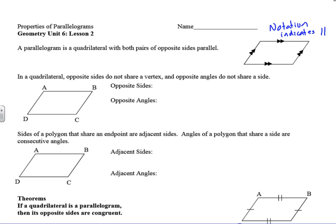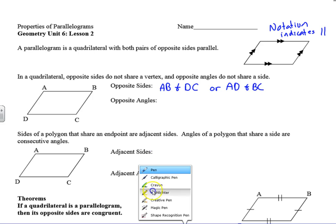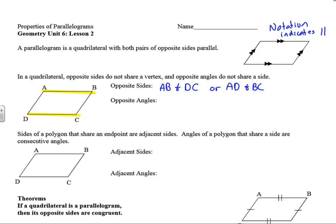So in a quadrilateral, opposite sides do not share a vertex, and opposite angles do not share a side. As we look at this diagram of ABCD, opposite sides would be AB and DC as one pair, or AD and BC. Opposite angles would be angle A and angle C, or angle D and angle B.